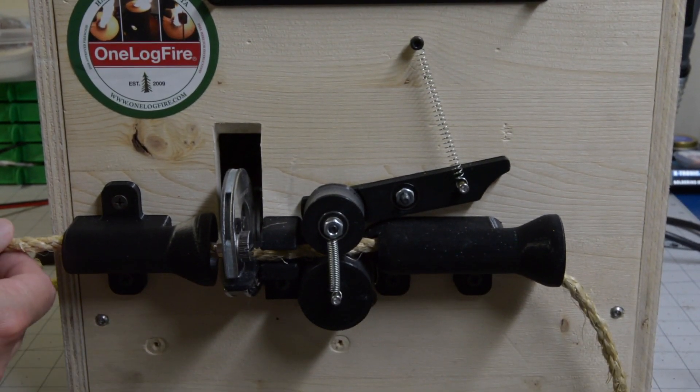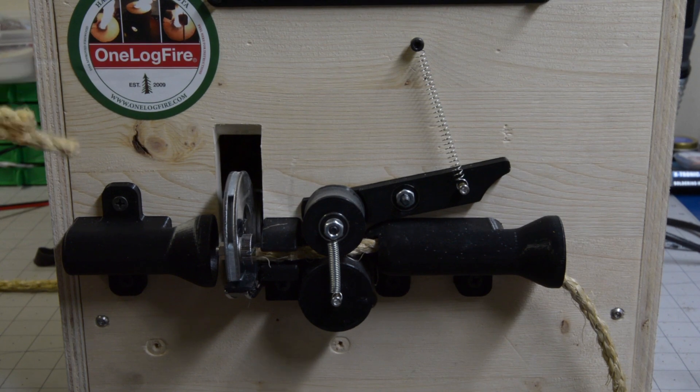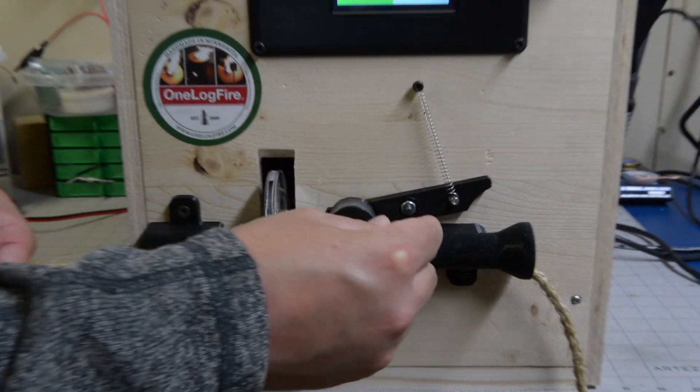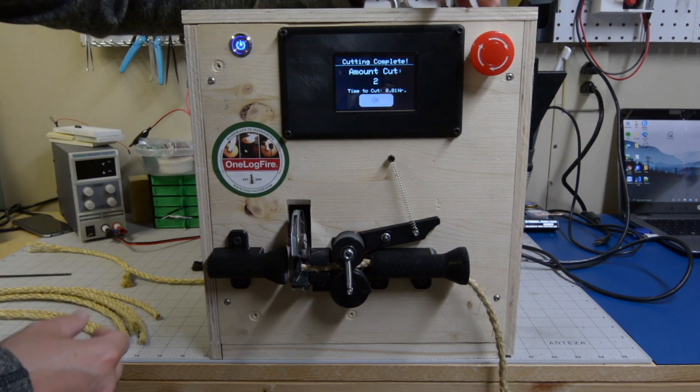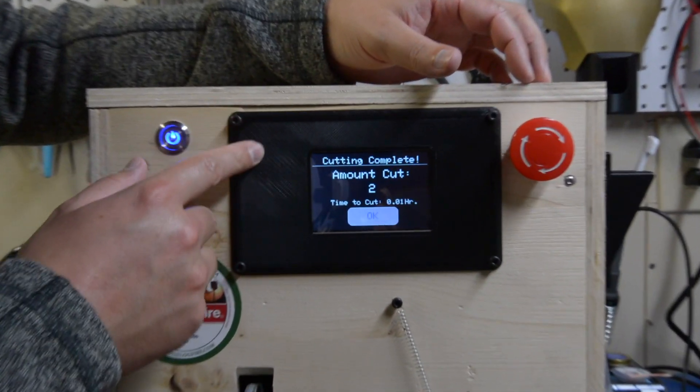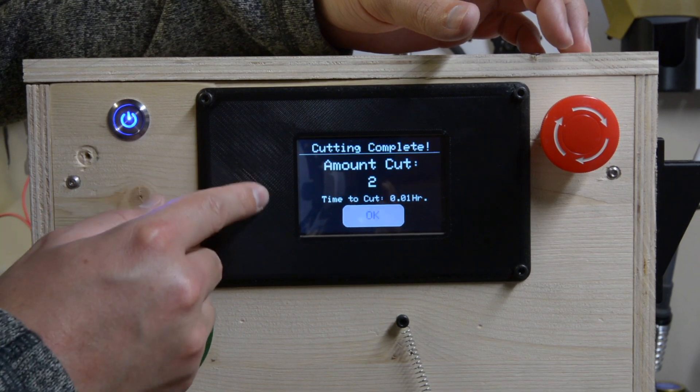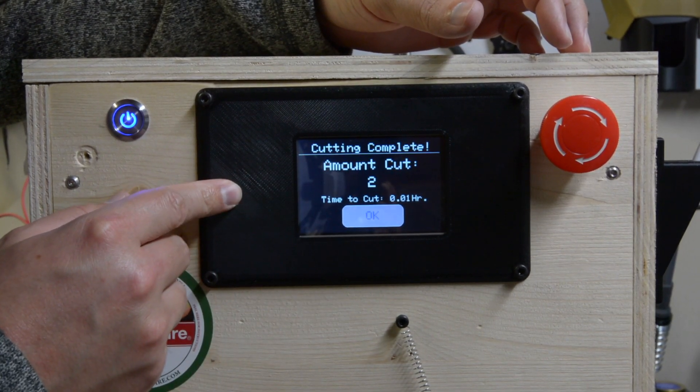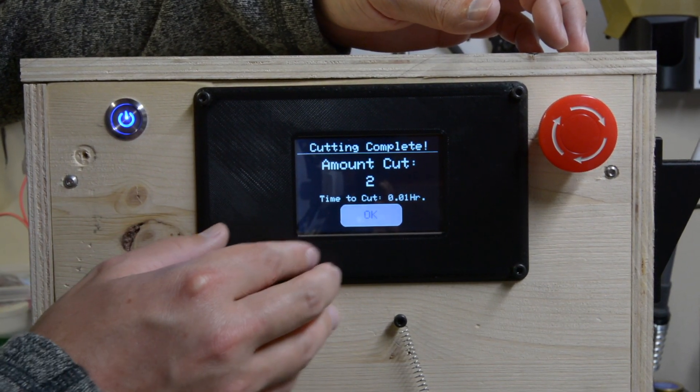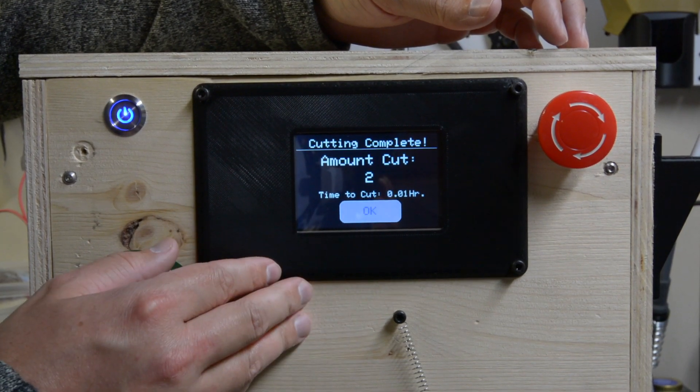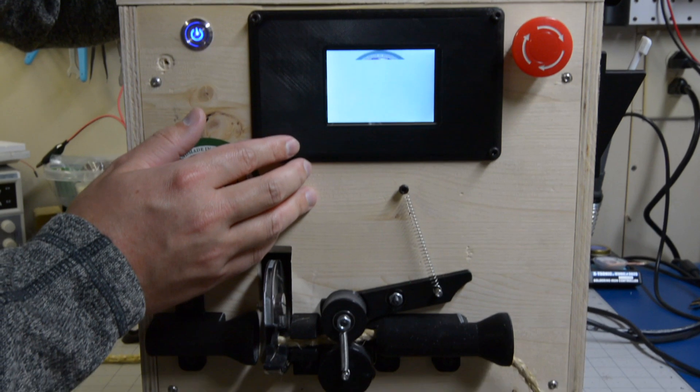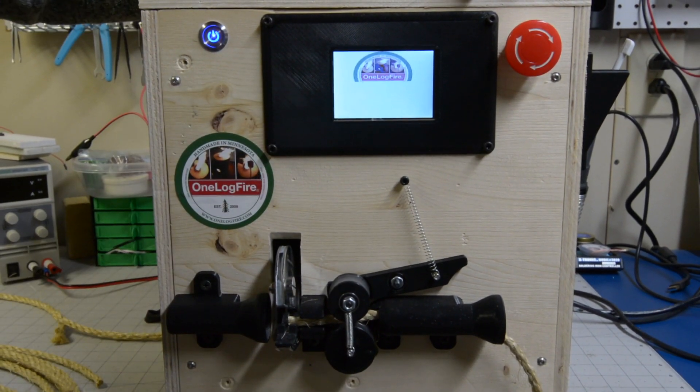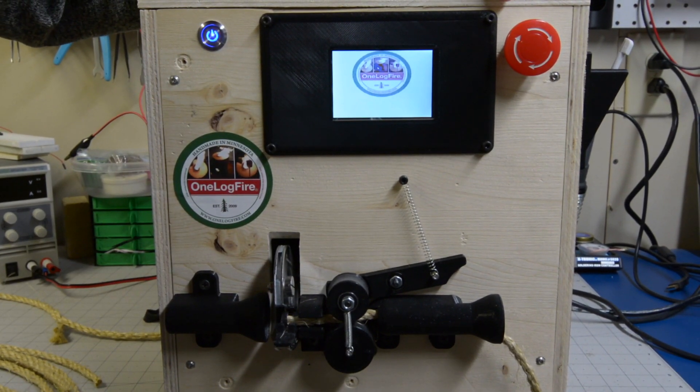The actuator will then come down and cut the second rope. So these are now a perfect 12 inch piece of rope that he can use on his products. And finally we will have our cut and complete menu. It'll show the total amount cut in our case was two and the total amount of time to cut in this case was 0.01 hours. After that it will then start in our start mode again and we will wait for our next order of ropes.